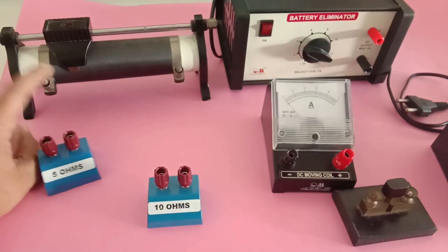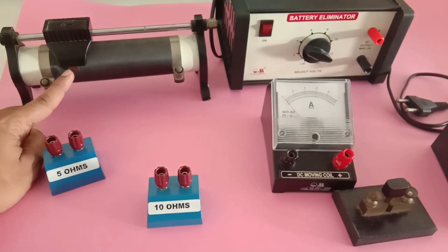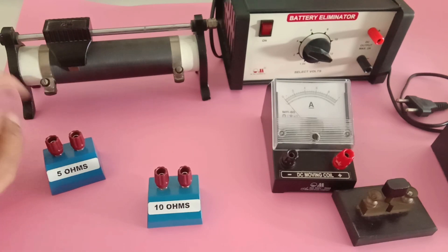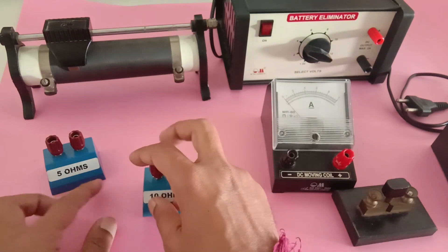So the job of this rheostat is to vary the resistance in the circuit. It's a variable resistance, whereas these two are fixed resistors.